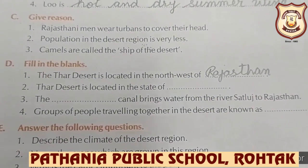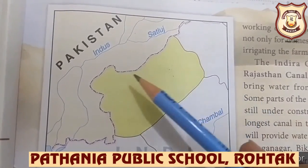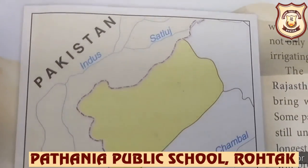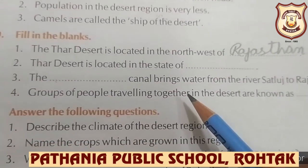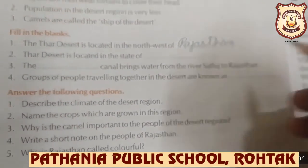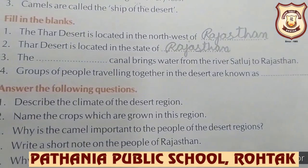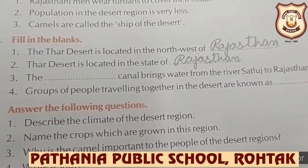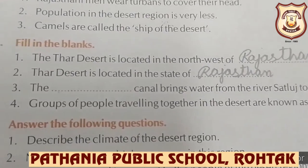You can see on the map — the Thar desert is located in the north west of Rajasthan. Next, the Thar desert is located mainly in the state of Rajasthan, though it also covers some parts of Punjab, Haryana, and Gujarat. But mainly it is in Rajasthan, so write 'Rajasthan' here.